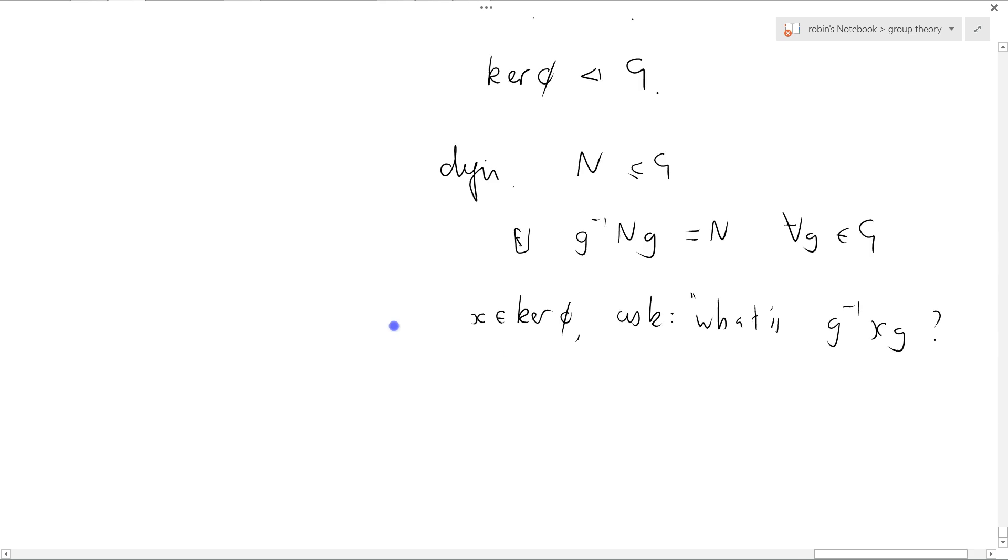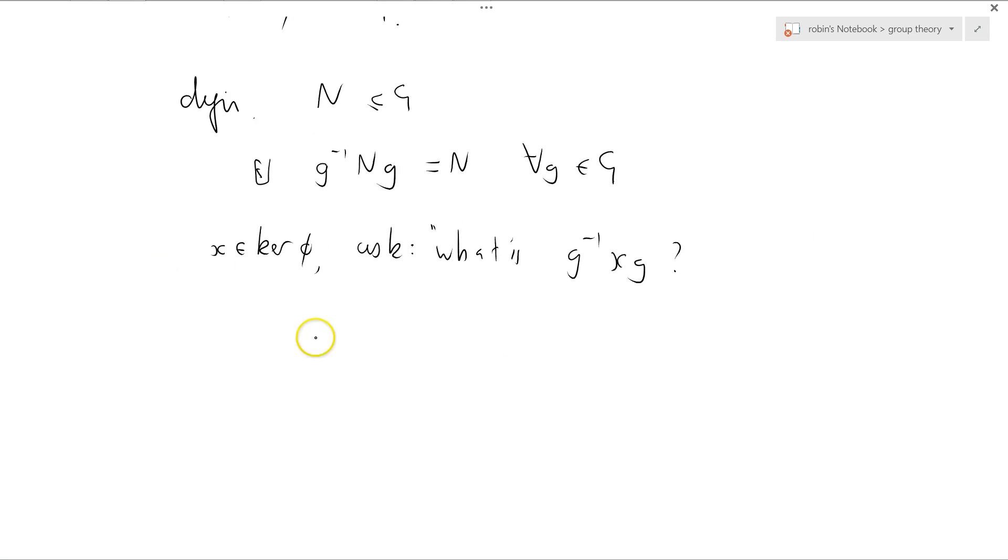What do we know about that? Well, the only thing we really know about it, the only thing we really want to know about it, is what is phi of G inverse XG? So we haven't specified what this element little g is, but we haven't specified it yet, but we'll see, it doesn't matter.